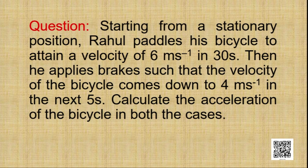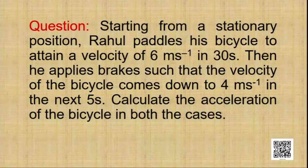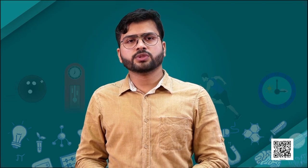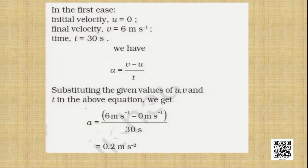In the second case, when he applies the brake, his velocity reduces from 6 meter per second to 4 meter per second in a time duration of 5 seconds — here there is a negative acceleration, that is retardation. For case 1: initial velocity u = 0, final velocity v = 6 m/s, time t = 30 s. Applying the formula a = (v − u) / t and substituting, we get acceleration = 0.2 meter per second square.